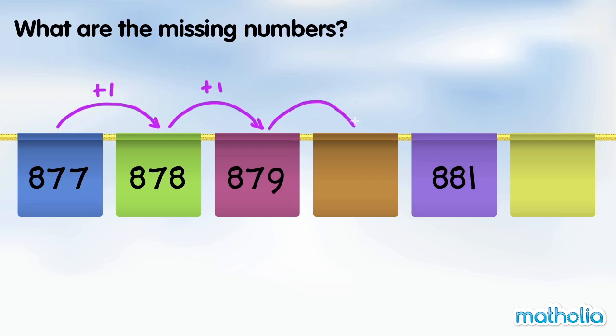879 plus 1 is 880. 881 plus 1 is 882. The missing numbers are 880 and 882.